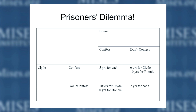If neither of them confesses, the evidence isn't good enough for the most serious charge, but they can each be put away for two years on a lesser charge. If one confesses and the other doesn't, the confessor gets to go home while the other gets put away for ten years on a very serious charge. So if Clyde confesses and Bonnie does not, Clyde walks away while Bonnie gets ten years.